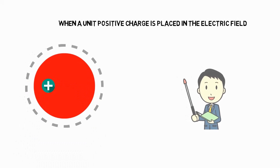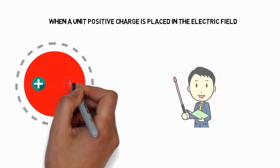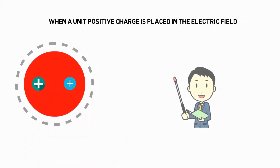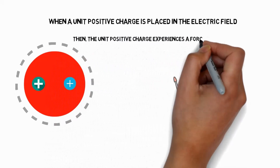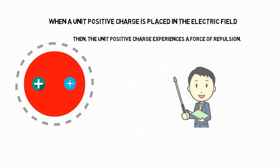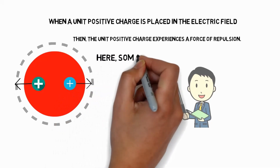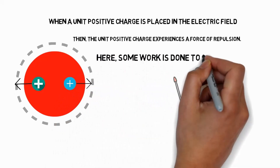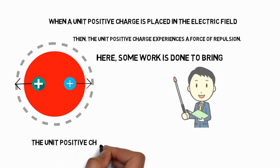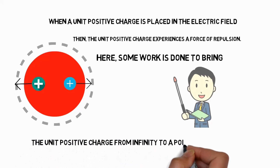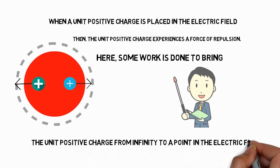Similarly, when a unit positive charge is placed in an electric field — let us say two positive charges are placed together — the unit positive charge will experience a force of repulsion. Since positive and positive are like charges, they experience repulsion. Some work is done in moving a unit positive charge from one place to another against this force of repulsion.